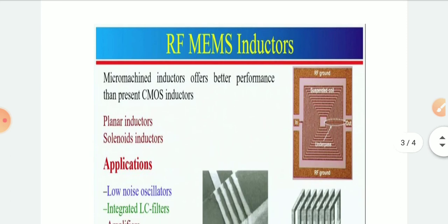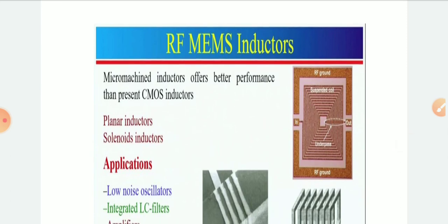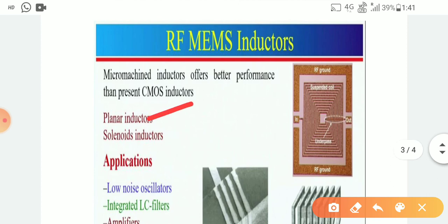RF MEMS inductors. Micromachined inductors offer better performance than present CMOS inductors. Generally, they are divided into two categories: planar inductors and solenoid inductors. The most important properties of RF inductors are the inductance value, quality factor, and self-resonance. Among these, quality factor is the most critical parameter. RF MEMS inductors are of two types: planar inductors and solenoid inductors. The planar inductors can be spiral type.